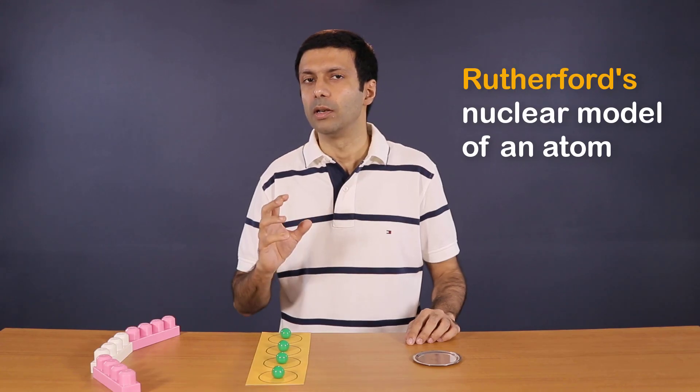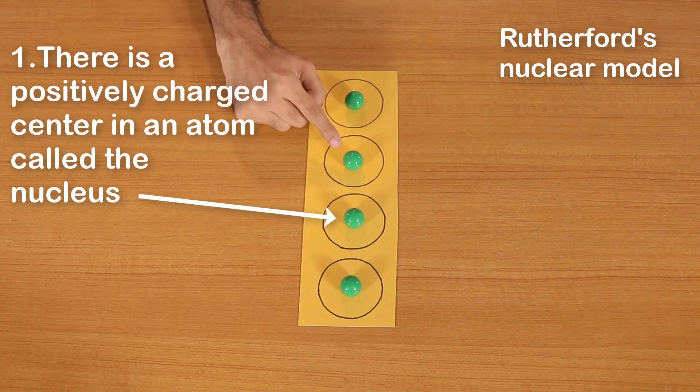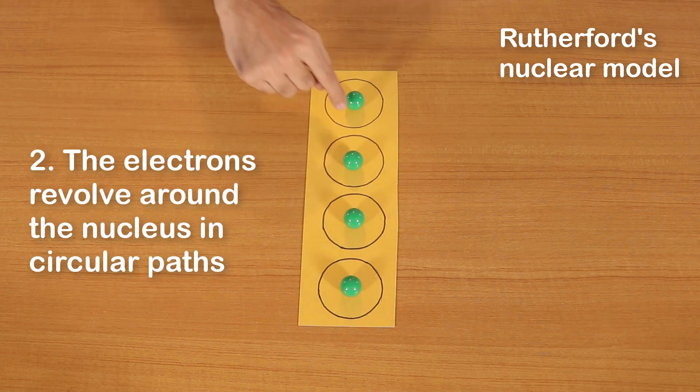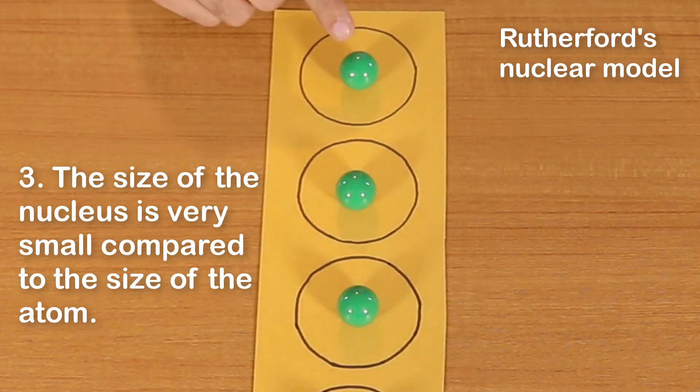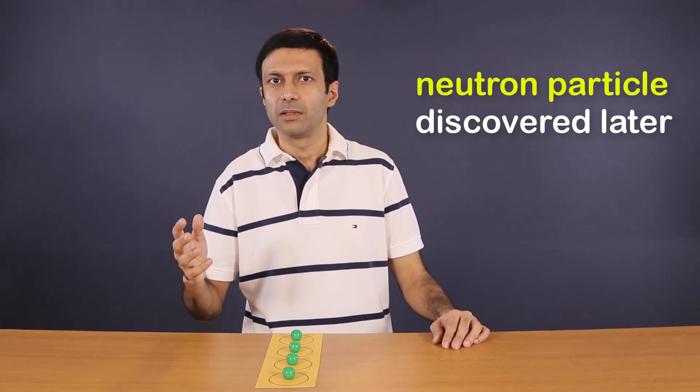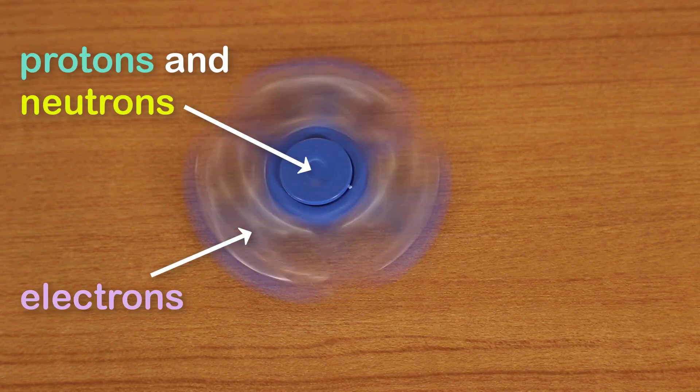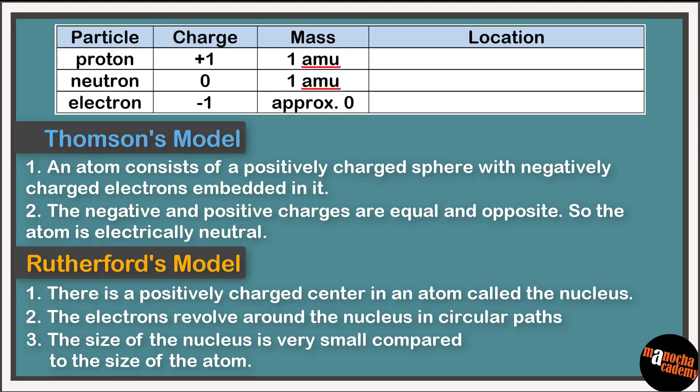Rutherford proposed the nuclear model of the atom which states that there is a positively charged center in an atom called the nucleus. Nearly all the mass of the atom is in the nucleus. The electrons revolve around the nucleus in circular paths. The size of the nucleus is very small compared to the size of the atom. The neutron particle was discovered much later and added to the nucleus of the atom. So the structure of the atom looks like this spinning fidget spinner, with protons and neutrons in the center and electrons spinning outside it.